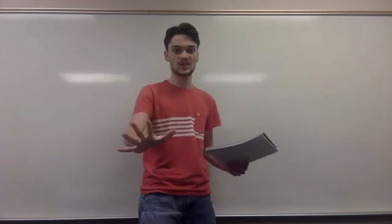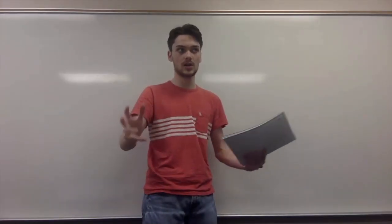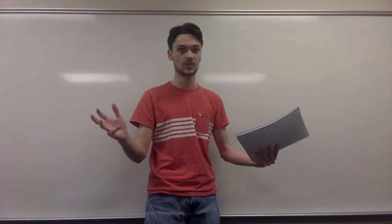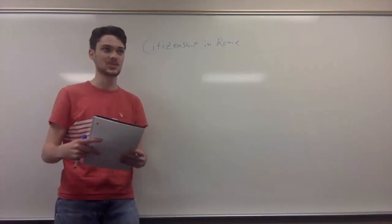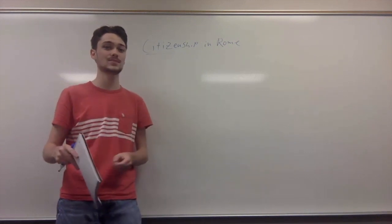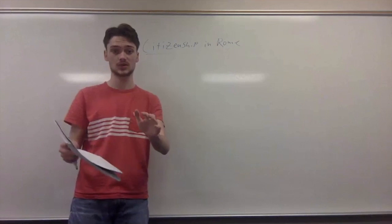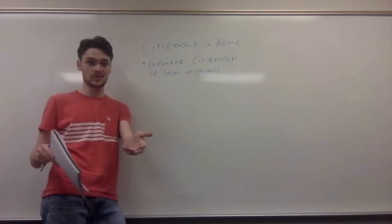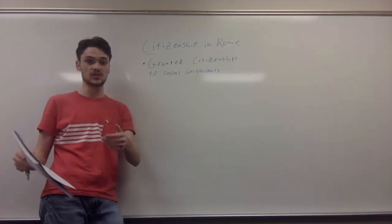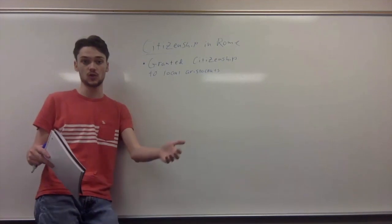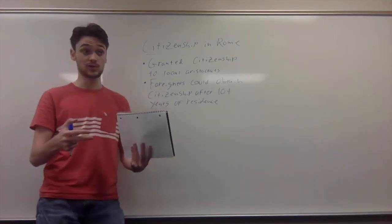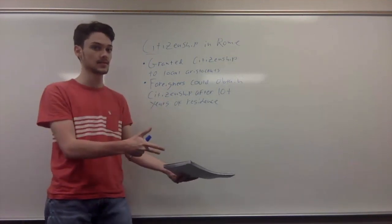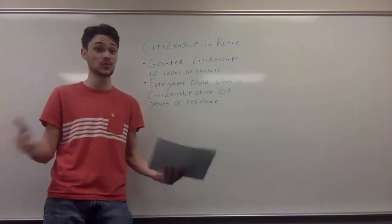Today we went over the other classical model of citizenship: the Roman model. Now, unlike Athens, Rome at its height was what one could call a pretty thick empire, so direct democracy wasn't going to cut it. For the purpose of administrative efficiency, citizenship was granted first and foremost to local aristocrats.